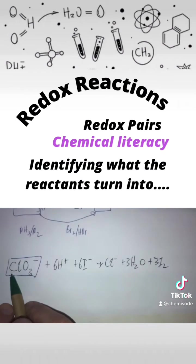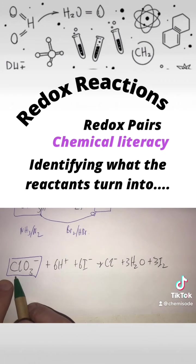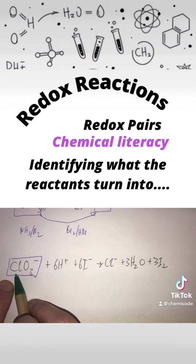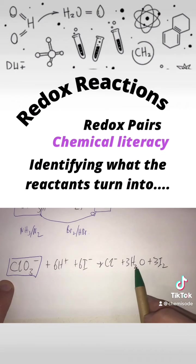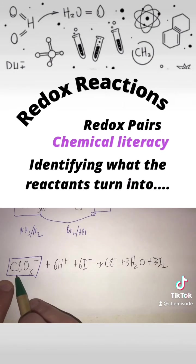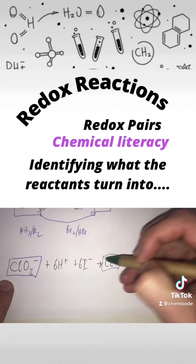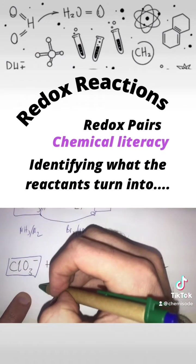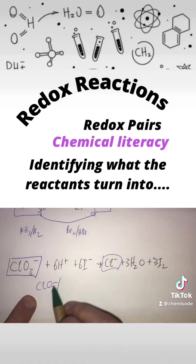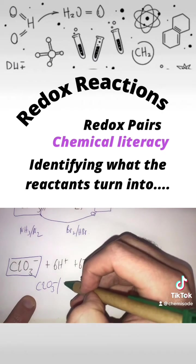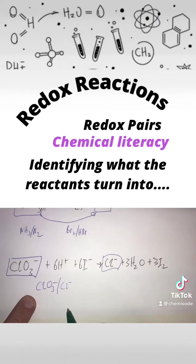We've got whatever this is — I think it's a chlorate ion — ClO₃⁻. Now which of these is it most likely turning into? Well, chlorine and chlorine — that makes sense. So this ion here, the ClO₃⁻, is going to form a redox pair with our chloride ion.